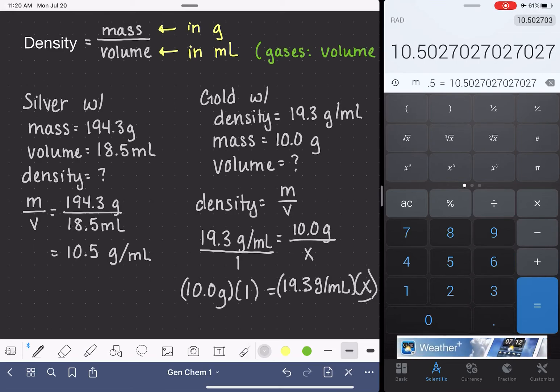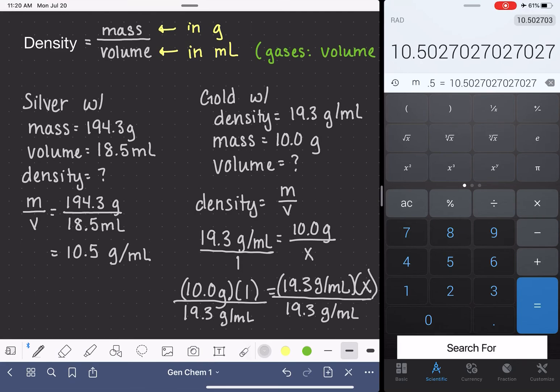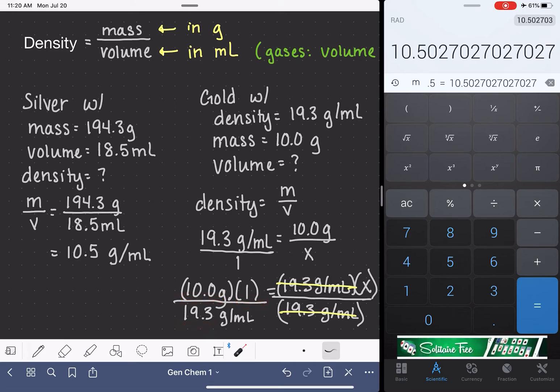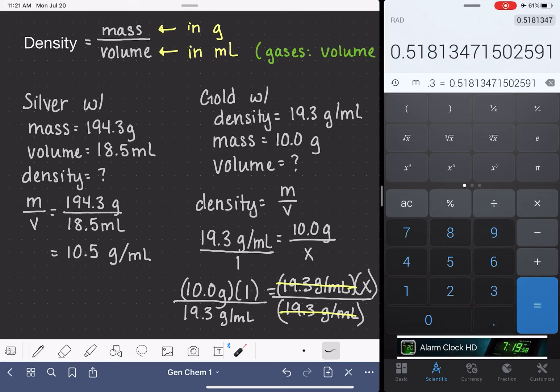Now we have to solve for X. How can we solve for X? Let's divide both sides by 19.3 grams per milliliter. These cancel each other out. And to solve for X, we just simply have to take 10 times 1 divided by 19.3. 10 divided by 19.3 is 0.518.